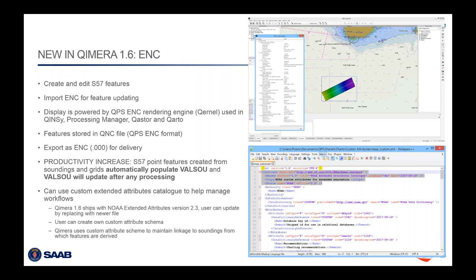Looking at North American ENC workflows, we've embedded the NOAA extended attributes — an XML file that's a custom catalog letting you add your own attributes to an ENC object, so people can mark things up, add comments, and manage the review, creation, and deletion of features. You can also create your own custom schema. We've made our own that maintains the linkage between the S57 features and the soundings and grids.